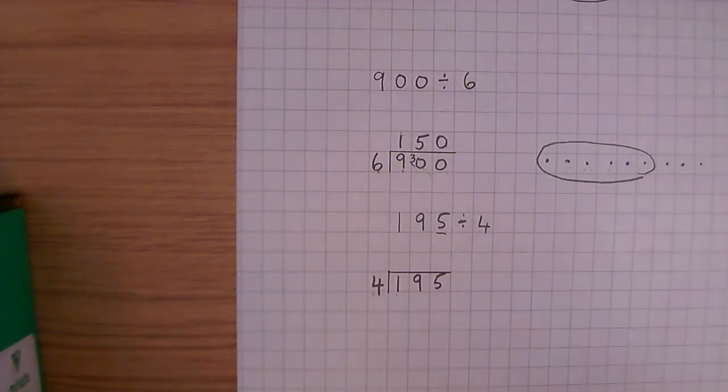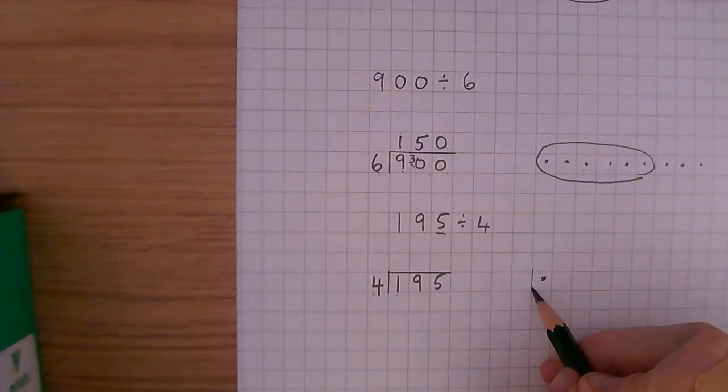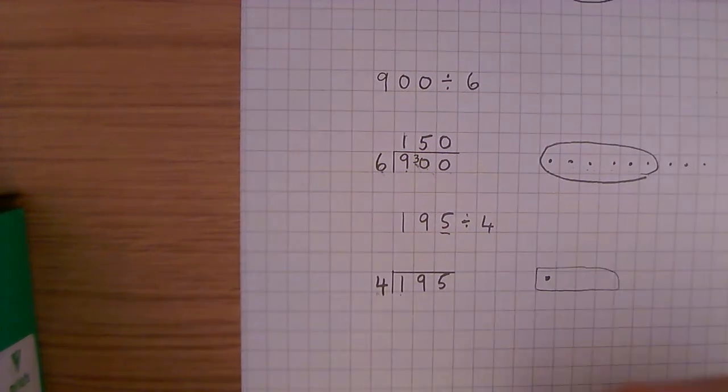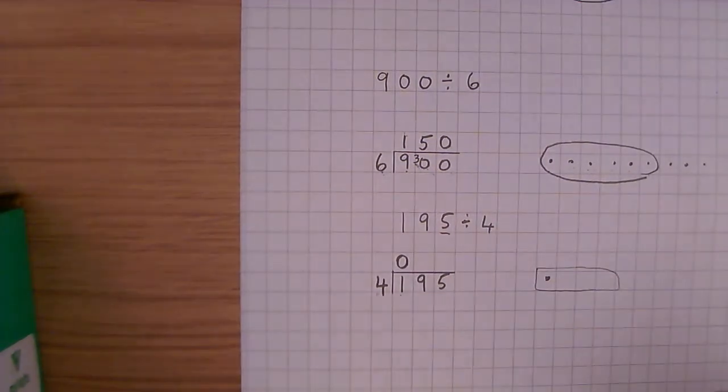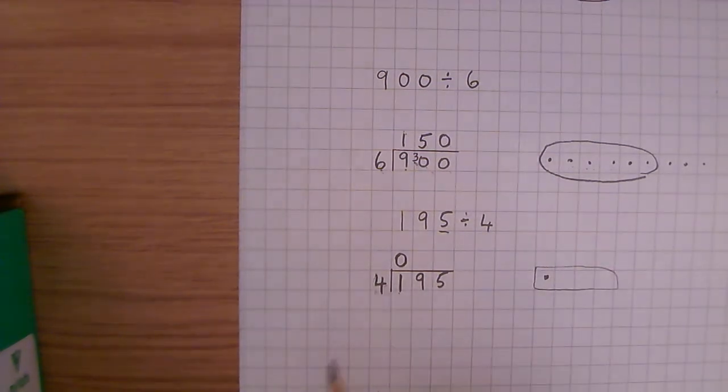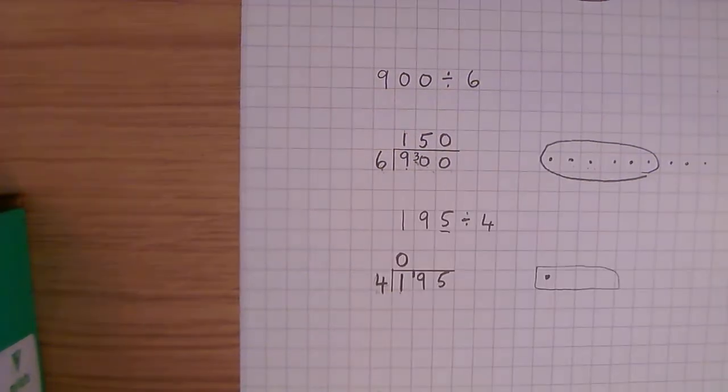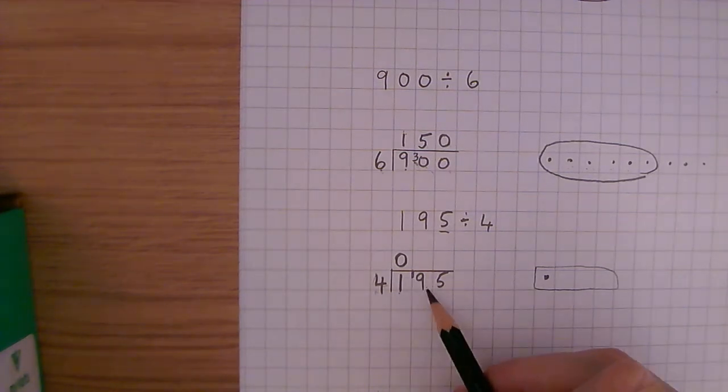195 divided by 4. How many 4's go into 1? So if I've got 1, I can't make a group of 4. So the answer is 0. And in fact, on any question, when this digit here is smaller than this digit here, the answer here is always going to be a 0. Now, what we do is we take that 1, and it goes on the shoulder of the 9.